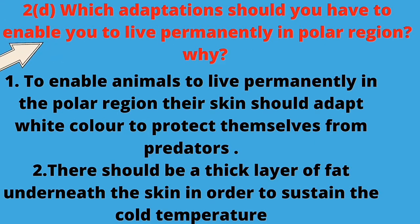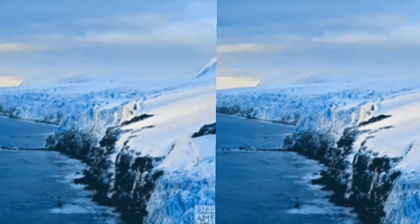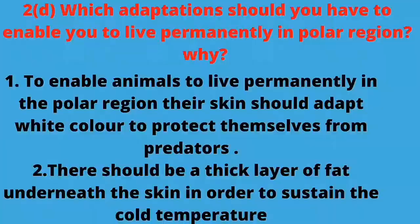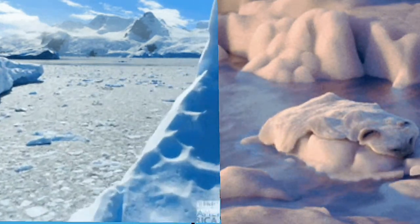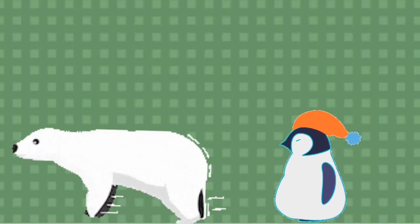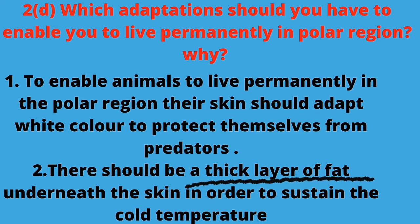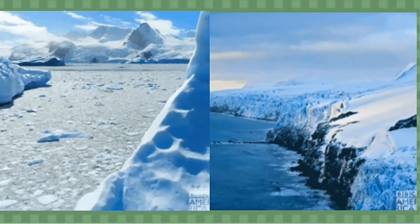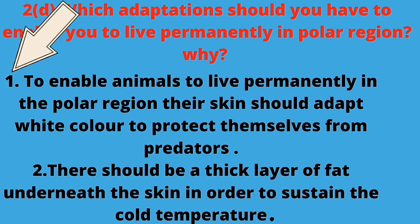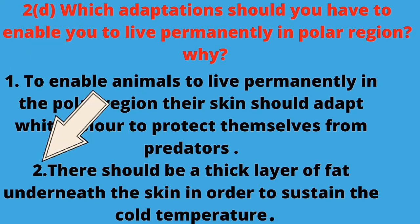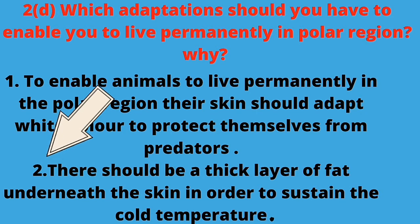Next question: which adaptations should an animal have to live permanently in polar regions? The answer is simple. The skin color should be white so that it can be protected from predators. And there should be a thick layer of fat under the skin so that it can bear the cold temperature and keep the body warm. Answer: To live permanently in polar regions, an animal's skin should be white to protect from predators, and there should be a thick layer of fat underneath the skin to sustain the cold temperature.